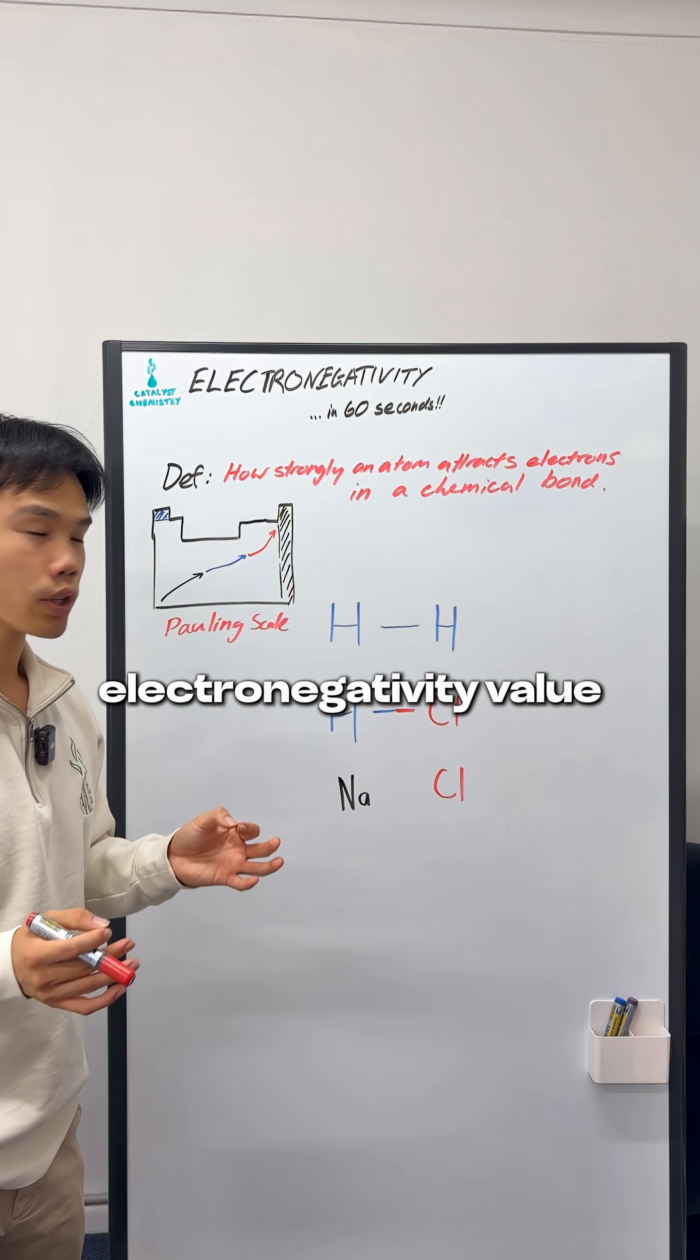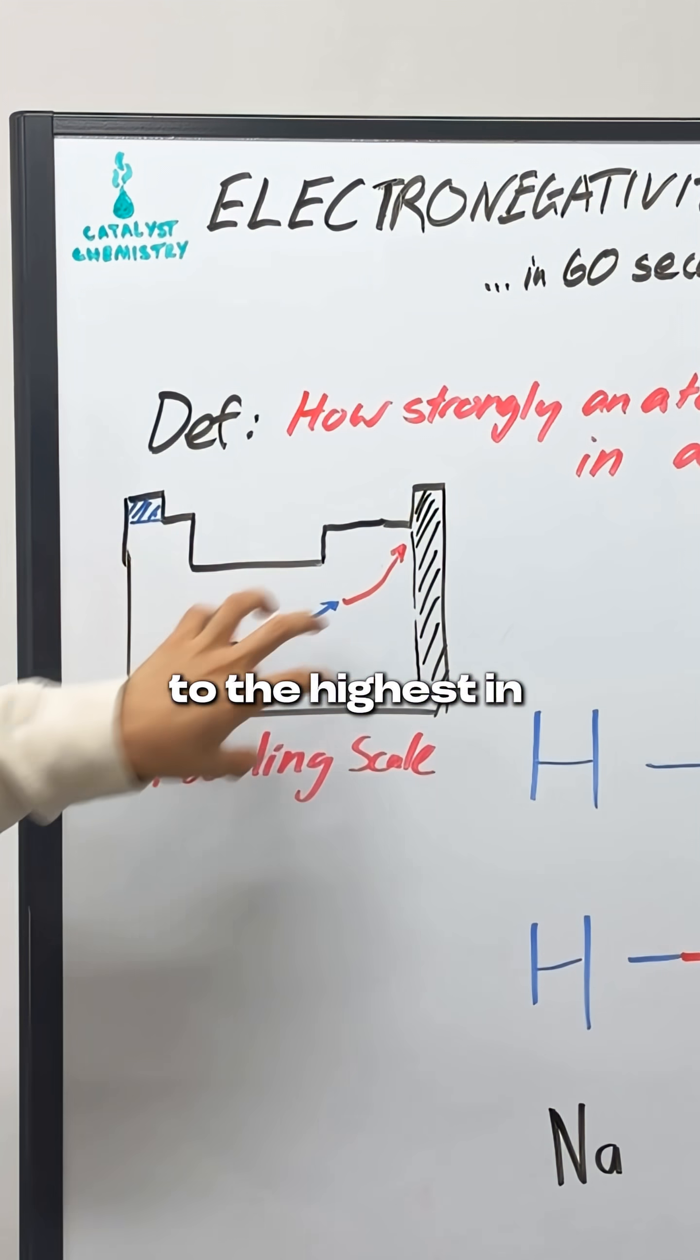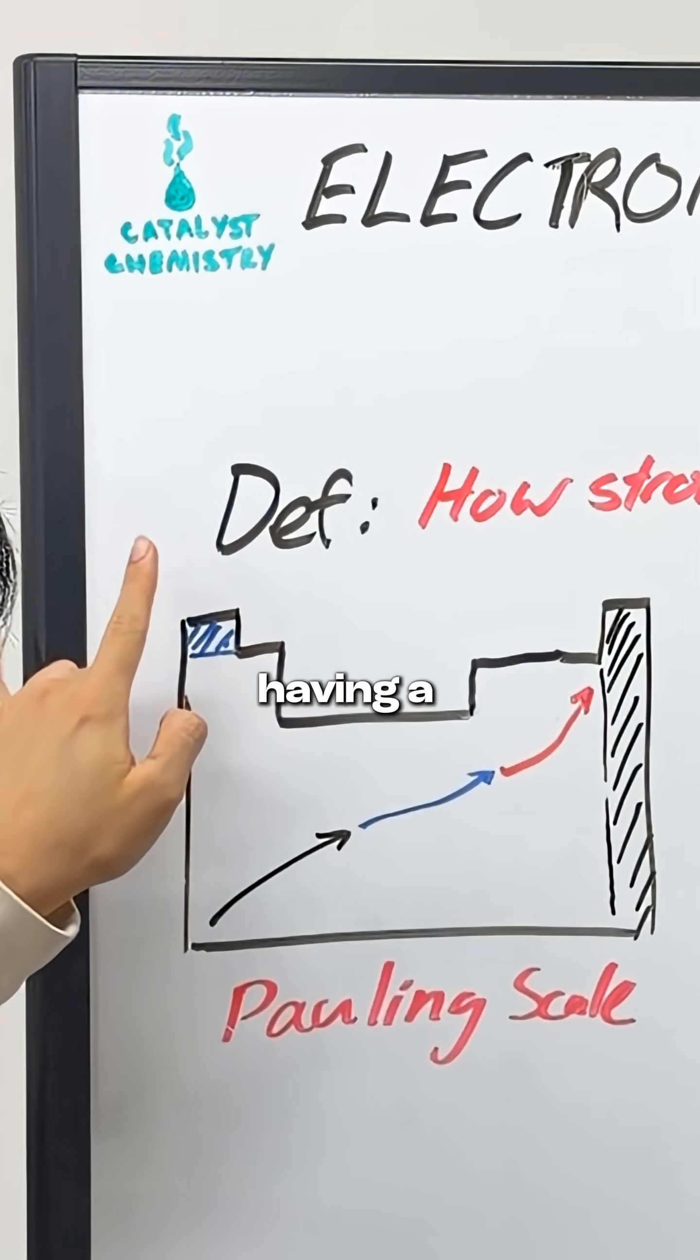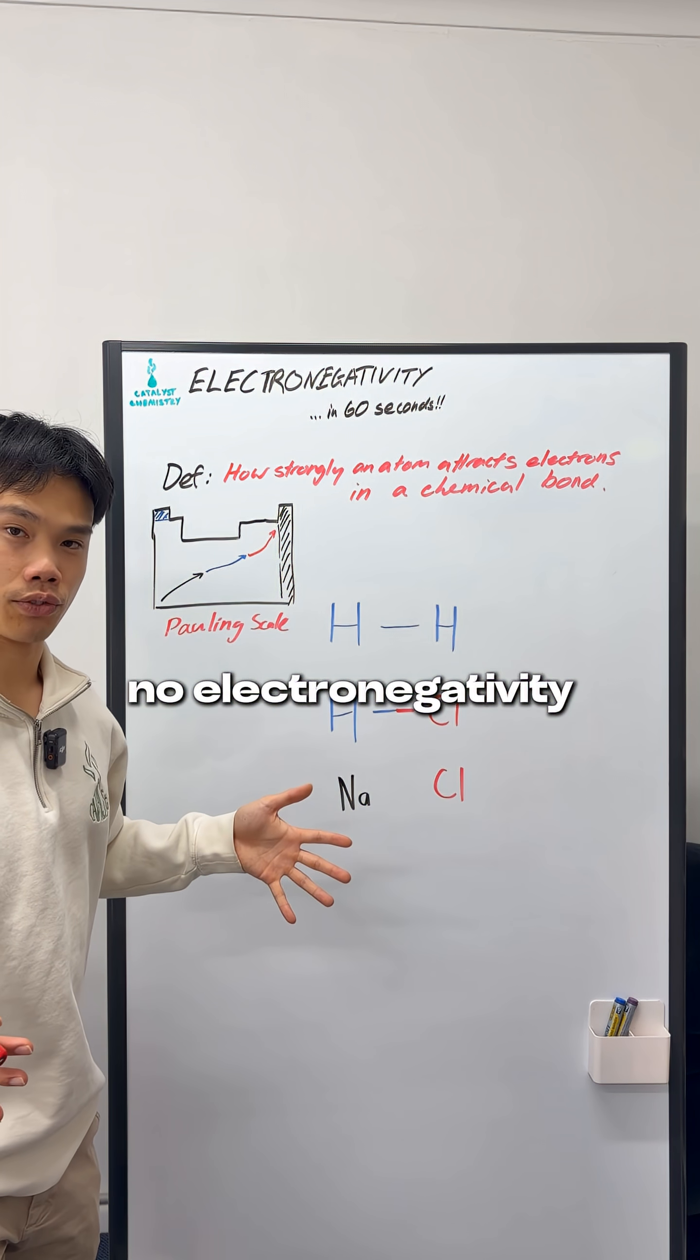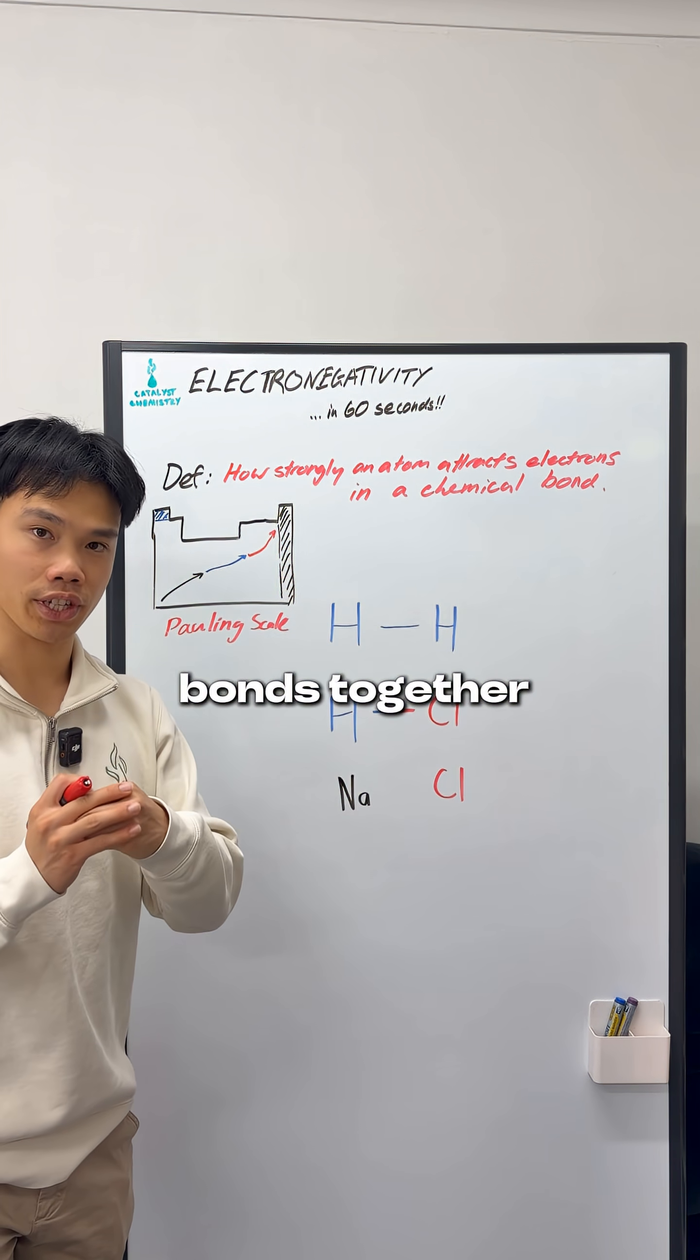Every atom has its own electronegativity value according to the Pauling scale, and it goes from lowest in the bottom left to highest in the top right, with two exceptions: hydrogen having a slightly higher value than we expect, and the noble gases off to the right, which have no electronegativity since they have full valence shell. This matters when we look at how two particular atoms will form bonds together.